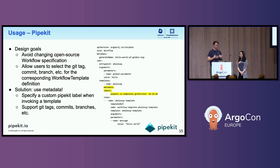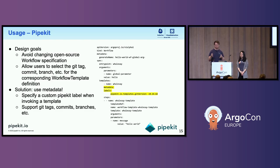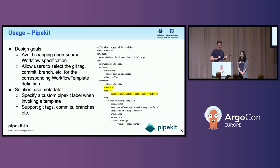Now I'll talk about PipeKit's usage. When we were designing it, we had two goals: first, avoid changing the open source workflow specification so companies can lift and shift their workflows without modification. Second, allow users to select the git tag, commit, or branch for corresponding workflow template definitions. These are somewhat conflicting goals — how do you not modify the workflow template but still add a bonus feature? Our engineer Philip came up with an interesting solution: we use metadata to override the git reference. We can specify a custom PipeKit label when invoking a template, supporting git tags, commits, branches, etc. You'll see in the highlighted section a workflow with a metadata labels section specifying a pipe.git.io version number, which corresponds to a git version. When this workflow is invoked, it tells the PipeKit control plane to look into the GitHub or GitLab connection at that given version and pull that workflow template down if it's not already in the cluster.